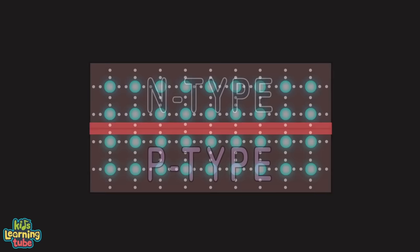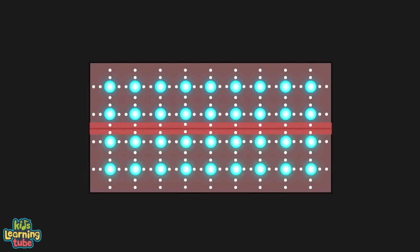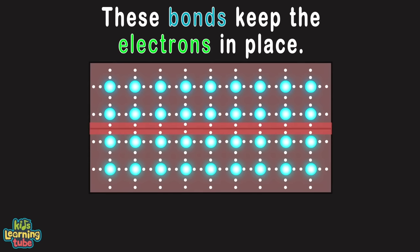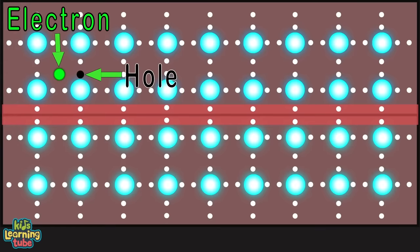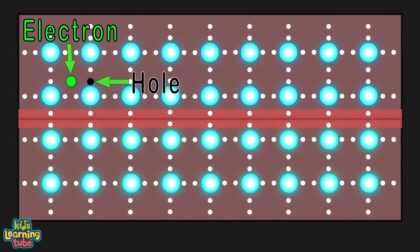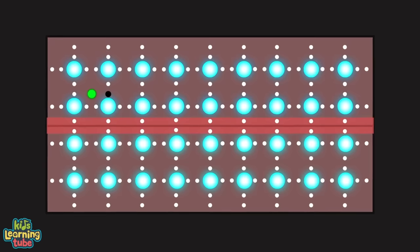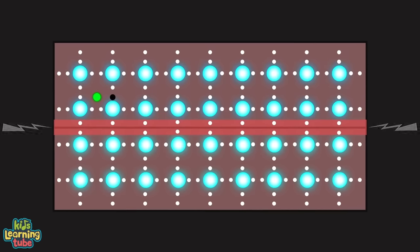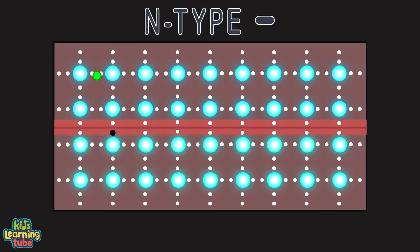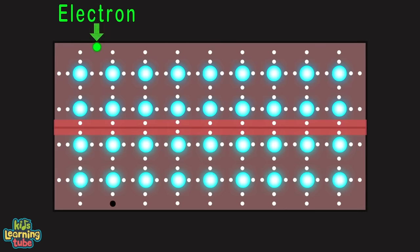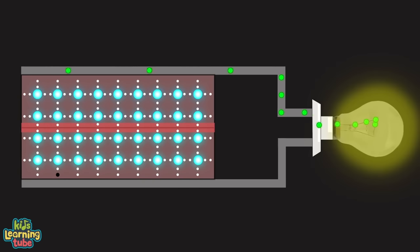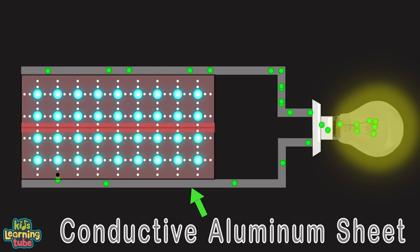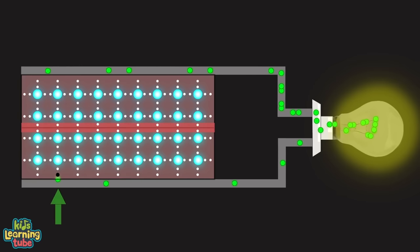When a photon shoots into a solar cell with enough energy, it can knock an electron from its bond, leaving a hole. The negatively charged electron and positively charged hole are free to roam. Because of the electrical field in the p-n junction, the electron is drawn to the n-type and the hole to the p-type. Mobile electrons are collected by metal strips at the top of the solar cell, then flow to the external circuit to power a light bulb, and return via the conductive aluminum sheet on the back.